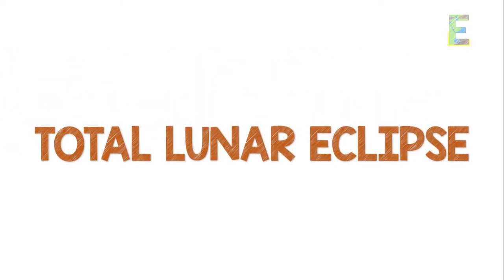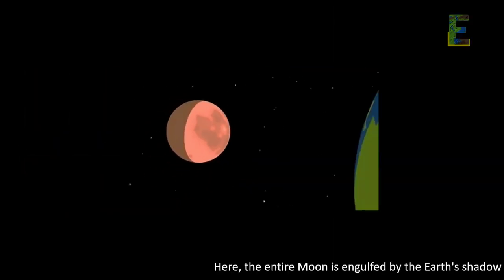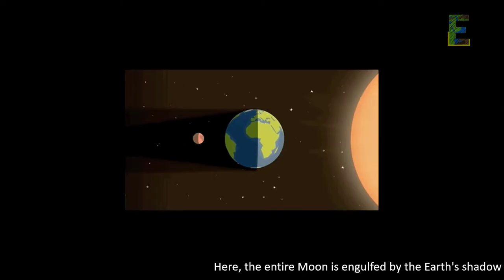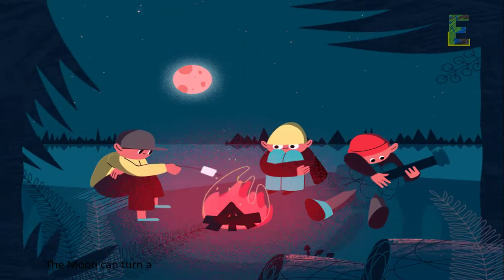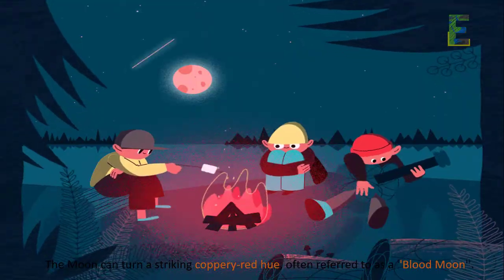Total Lunar Eclipse. The Total Lunar Eclipse is the grand finale. Here, the entire Moon is engulfed by the Earth's shadow. The Moon can turn a striking coppery-red hue, often referred to as a Blood Moon.